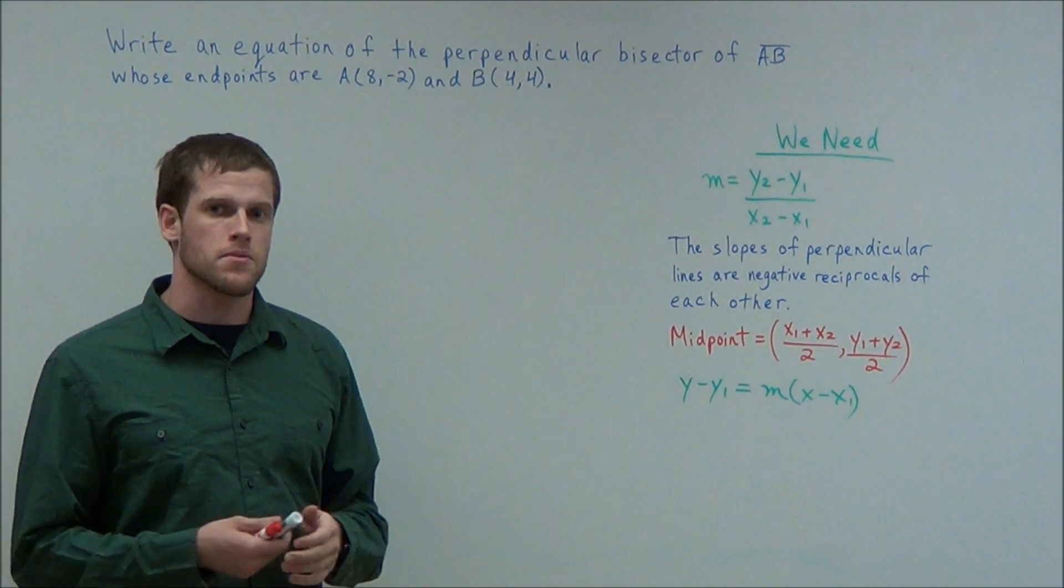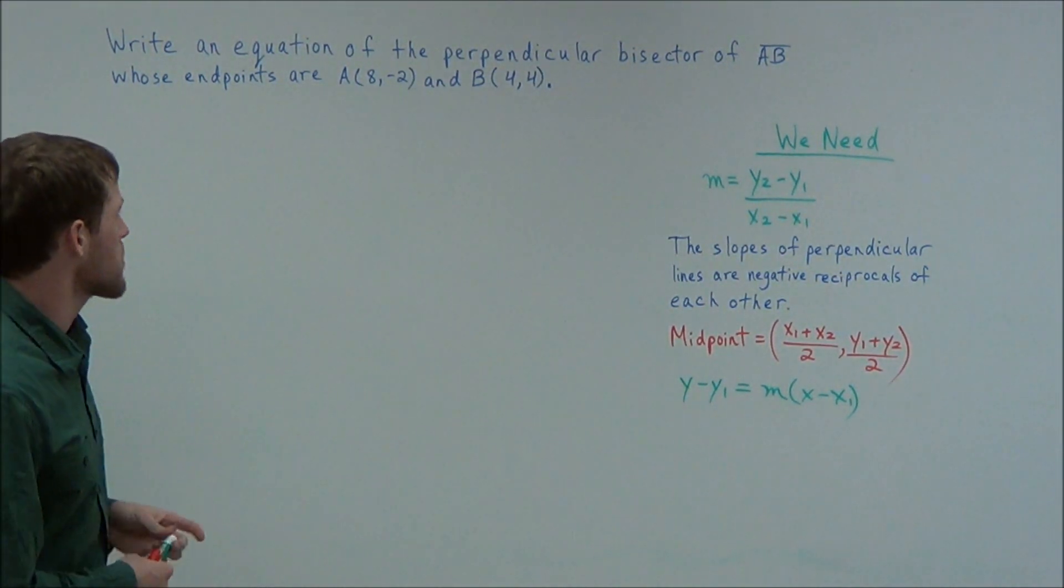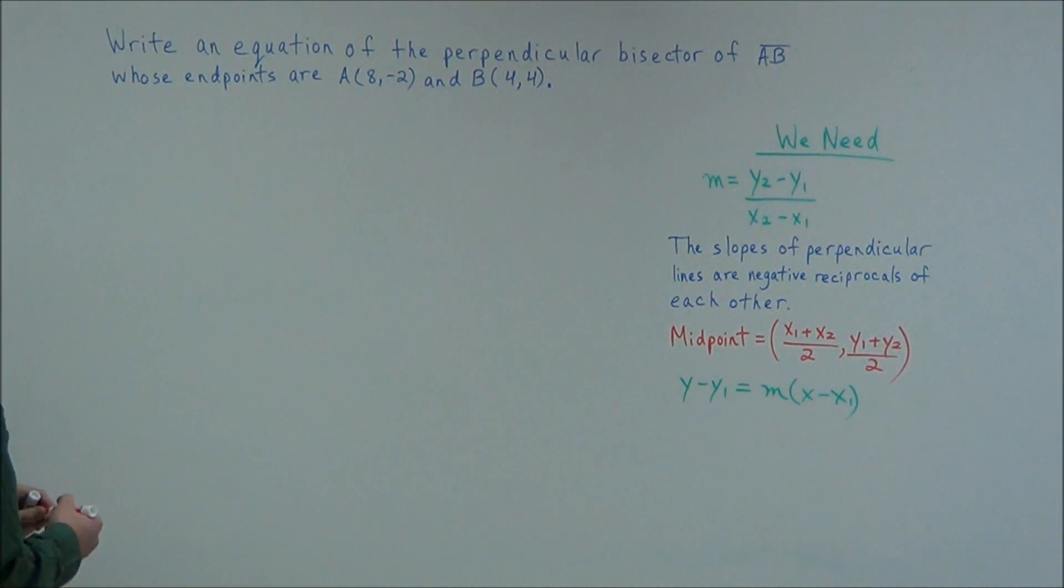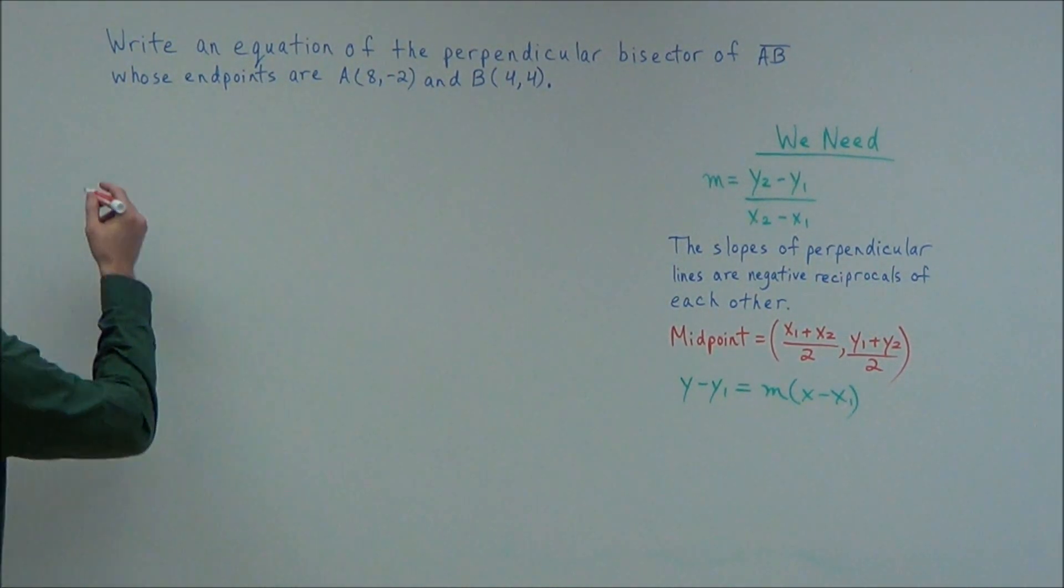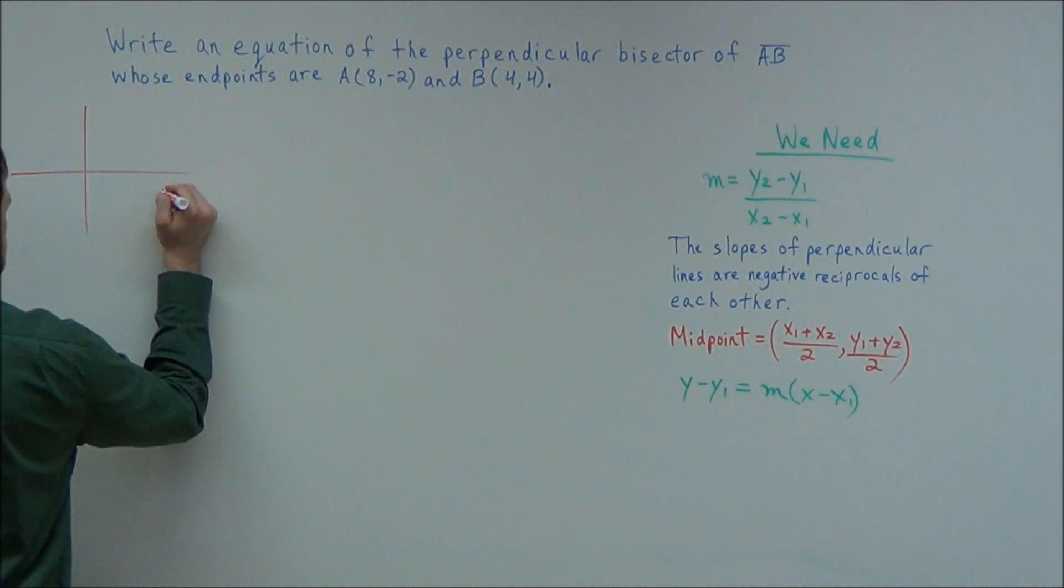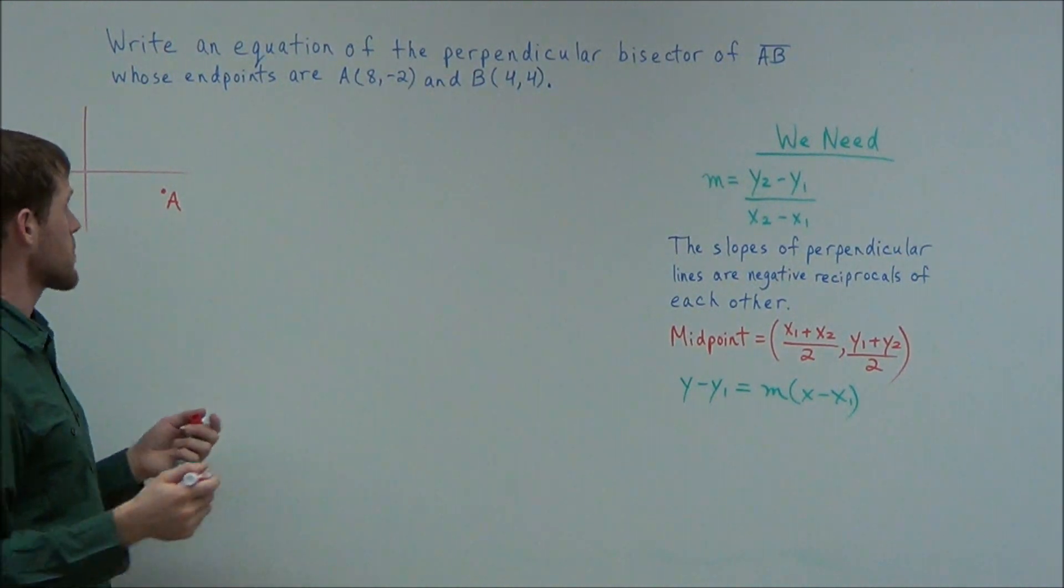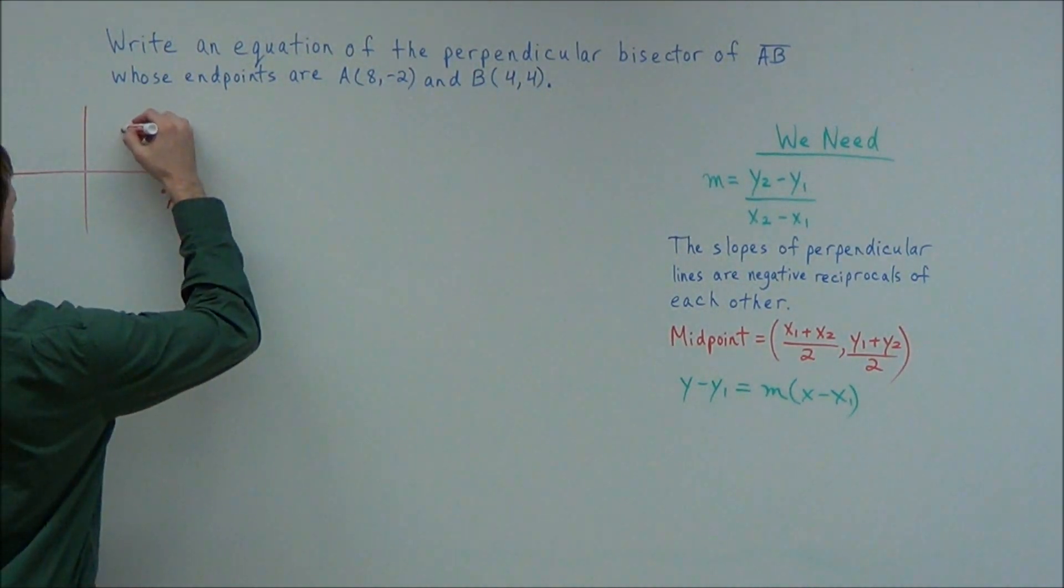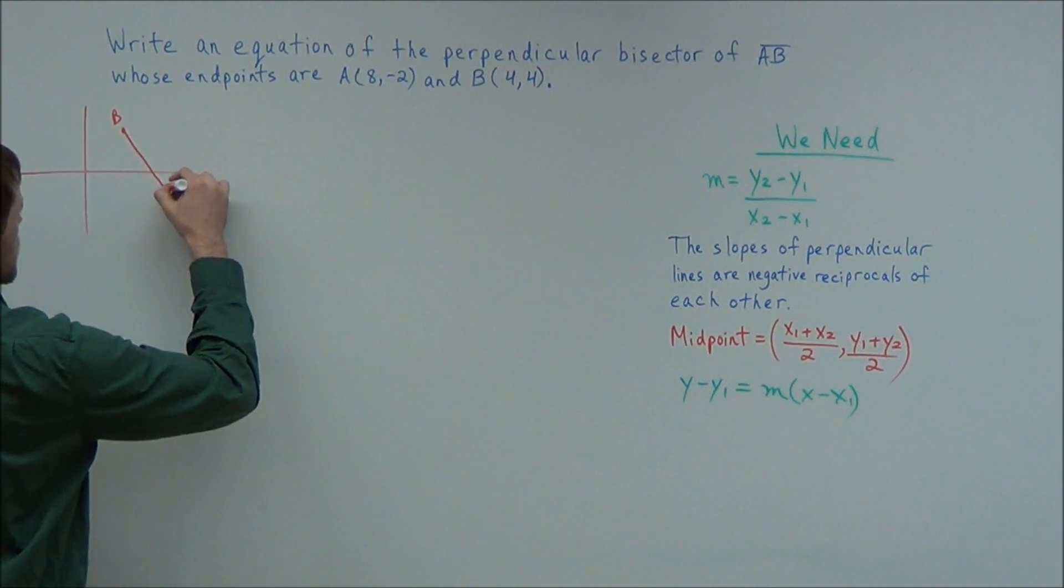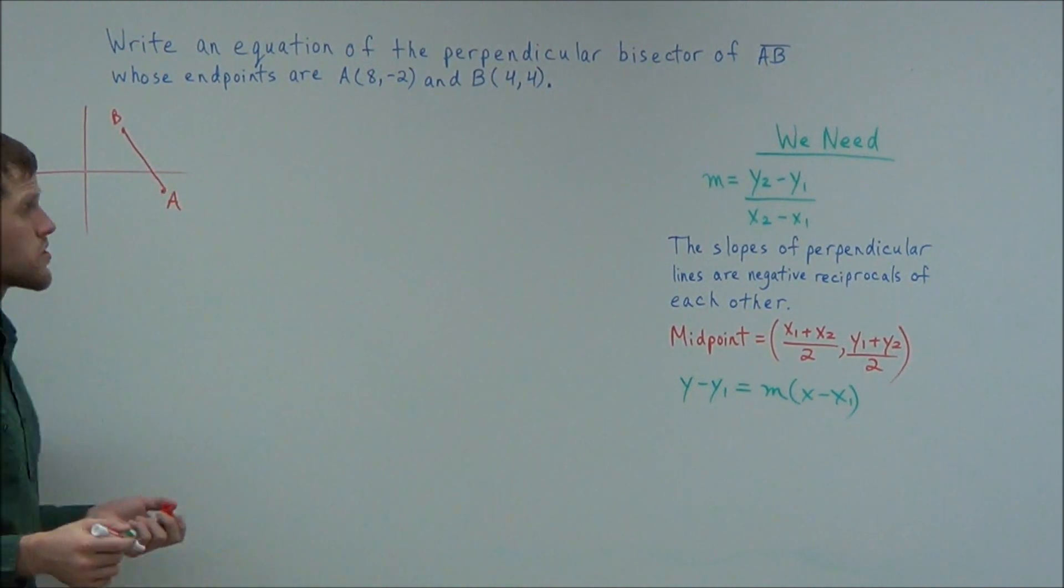That is, we break the problem down in steps. So what we could do first is, we could find the slope of our original line segment. So now just to get a visual of what's going on, we have 8, -2 is somewhere out here. We don't need to be precise because we just want to get a feel for what's going on. And 4, 4 would be somewhere up in this range here. So what we need to do first is find the slope of the original line segment.